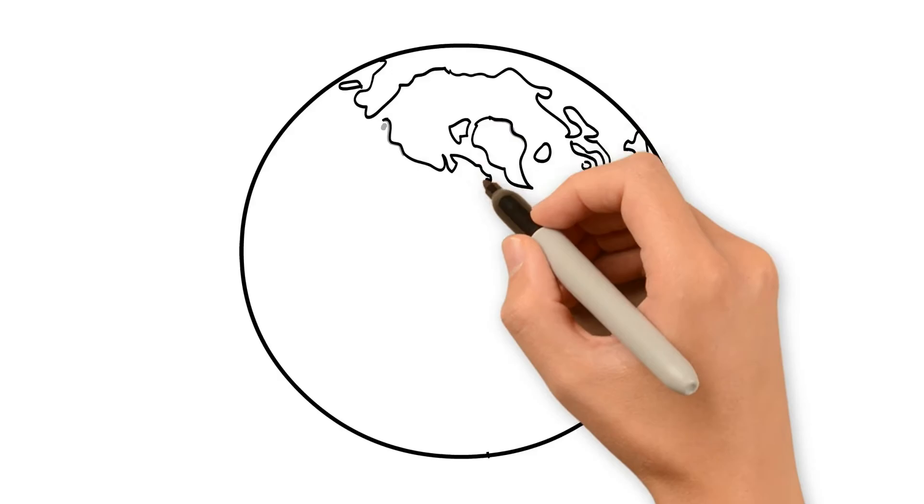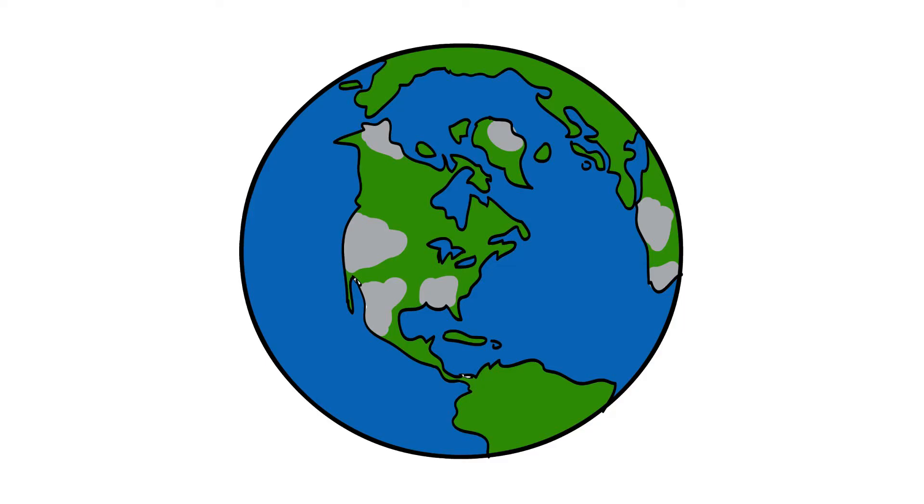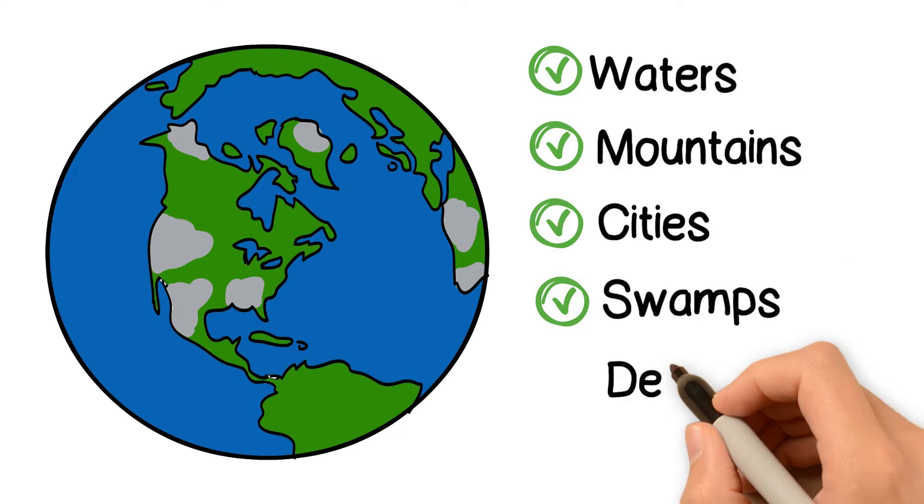In fact, only around 3% of the Earth's surface is arable. The rest consists of waters, mountains, cities, swamps, and deserts.